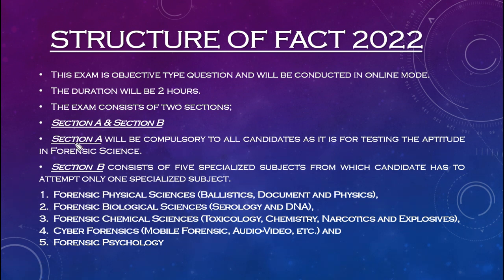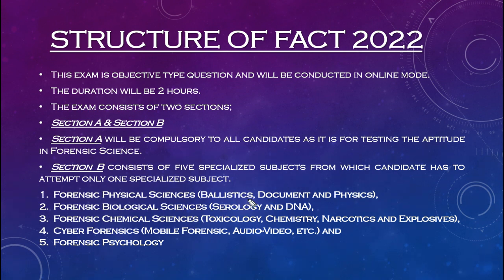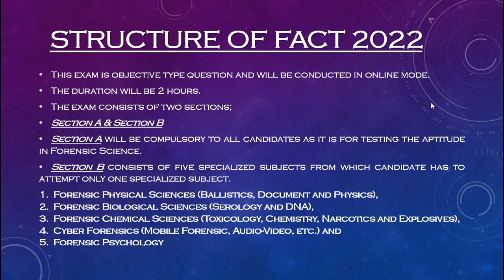Section B consists of five specialized subjects, from which you have to choose one. The subjects are: forensic physical sciences like ballistics, document and physics; forensic biological sciences, which includes serology and DNA; forensic chemical sciences, which includes toxicology, chemistry, narcotics and explosives; cyber forensics, which includes mobile forensic, audio video, etc.; and the last one is forensic psychology.